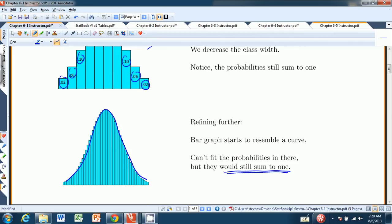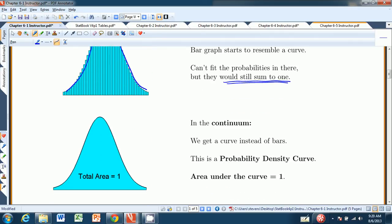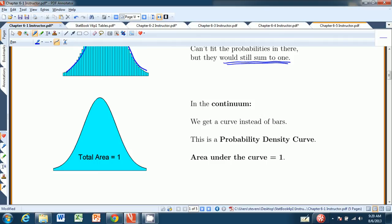So in the continuum, if we refine our class widths to be infinitely thin, what we get is a probability density curve. So there's no more bars. It's just a single curve.